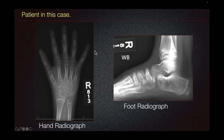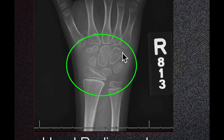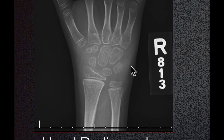The patient presented with hand and ankle radiographs. On the hand radiograph, we can see bony demineralization of the carpal bones, characterized by decreased density when correlated to the distal ulnar and radial diaphysis. There is no bony erosion or ankylosis seen on this patient.